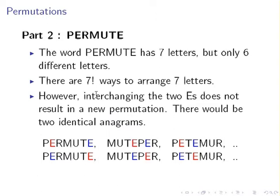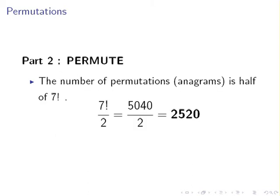So, essentially what we're going to do here is divide the total number of permutations by the number of copies we have. So, the answer is half of seven factorial. Seven factorial is 5040. So, the number of anagrams of the word PERMUTE is 2520. And that cuts out all the copies.